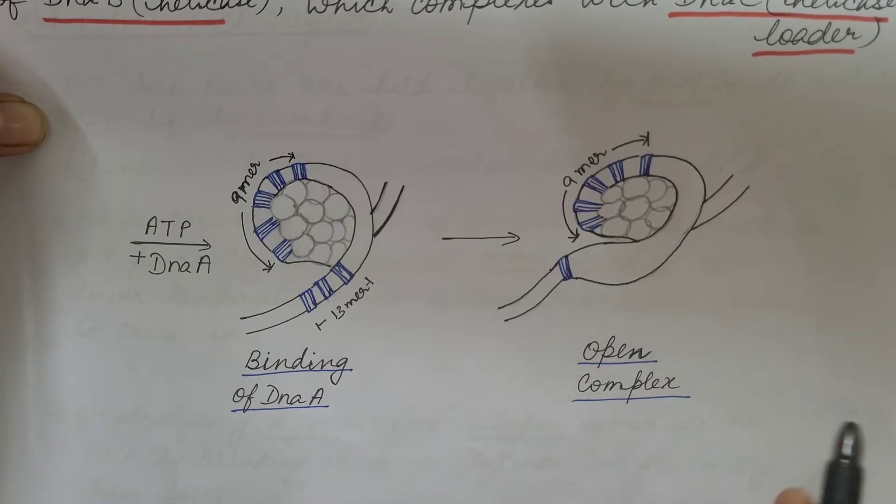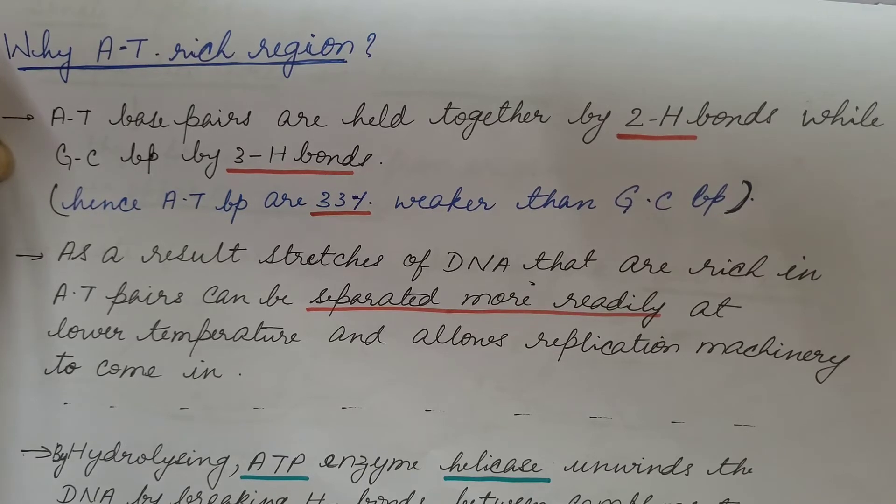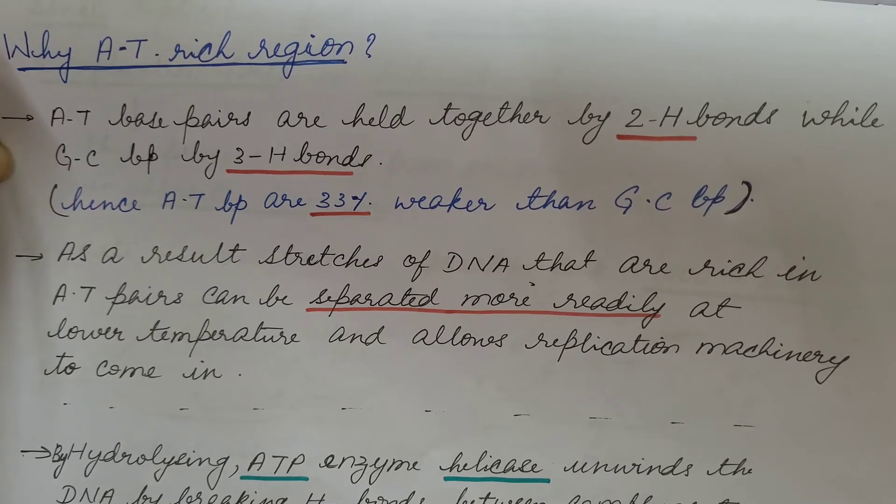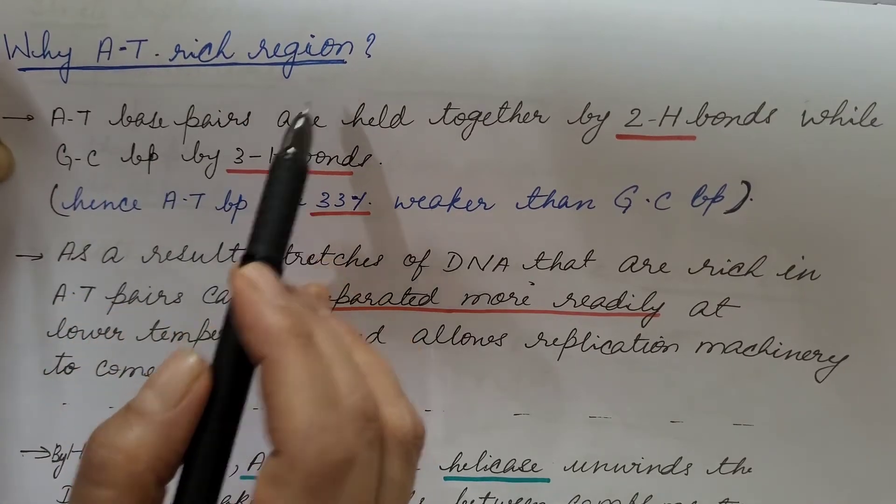Now it is known as open complex. So what we have seen that at the 13-mer region, the two strands separates and it is the start site for the DNA replication and this region is rich in AT base pairs. So why it is AT-rich region?